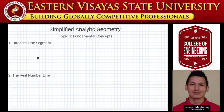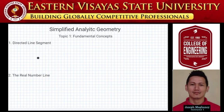Good day everyone, welcome to our channel. Our topic for today is the fundamental concept of analytic geometry. Analytic geometry is a branch of mathematics that deals with the properties, behaviors, and solutions of points, lines, curves, angles, surfaces, and solids by means of algebraic methods in relation to a coordinate system. In 1637, René Descartes introduced the coordinate system, unifying algebra and geometry.